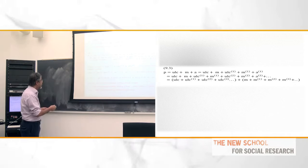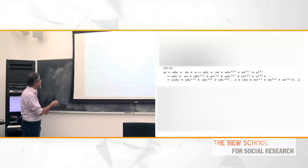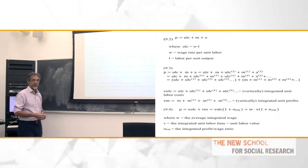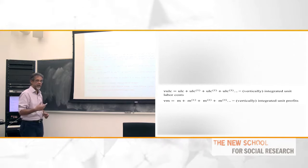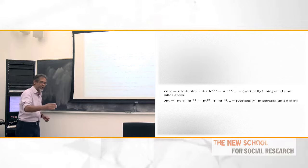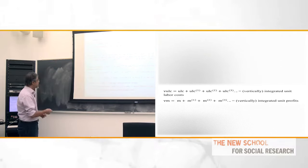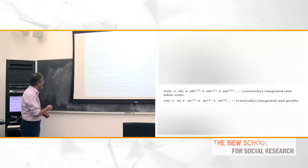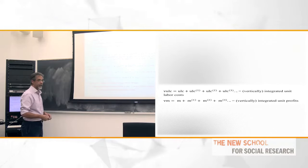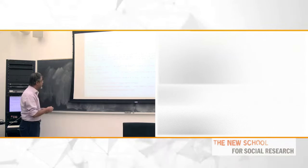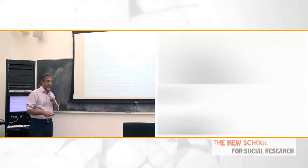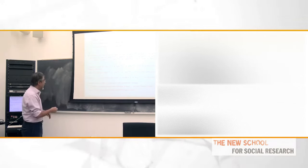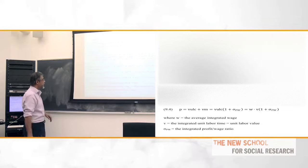Therefore, I can always group the terms together. I can group the first set into a collective term which is vertically integrated unit labor costs — that's using Pasinetti's definition of vertical integration — or integrated unit labor costs, integrated over direct and indirect stages. And integrated profit margins. So I'm going to call the first one VULC, which is the sum of all the direct and indirect unit labor costs, and VM, which is the sum of direct and indirect profit. By this simple device, I can write any price — market price, monopoly price, disequilibrium price, it doesn't matter — as the sum of vertically integrated unit labor costs and vertically integrated profit.